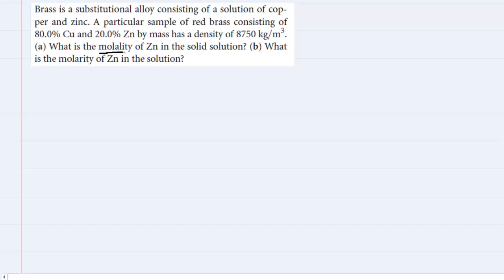In order to determine the molality and molarity of zinc in this solution, we will begin by assuming the solution has a particular mass. The simplest assumption is to use one kilogram as the mass of the solution, which is equivalent to 1,000 grams. You could use other masses, but one kilogram is the most convenient choice.